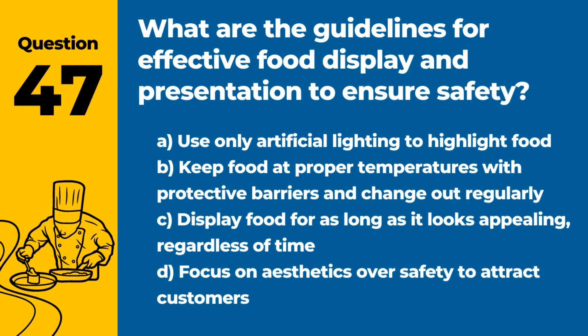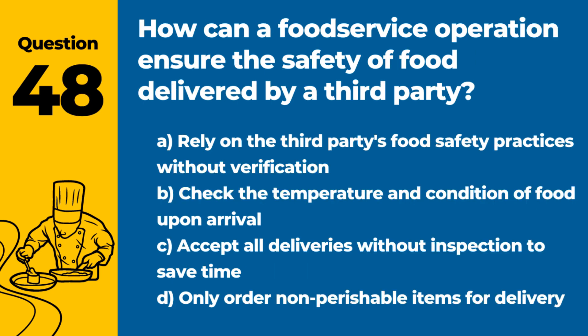Question 47. What are the guidelines for effective food display and presentation to ensure safety? Answer: B. Keep food at proper temperatures with protective barriers and change items regularly. Proper display practices prevent contamination and maintain food safety.